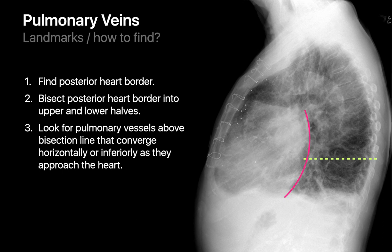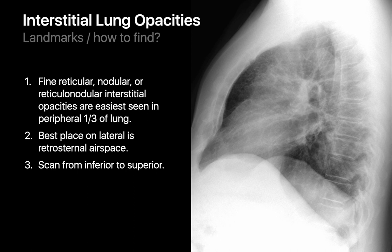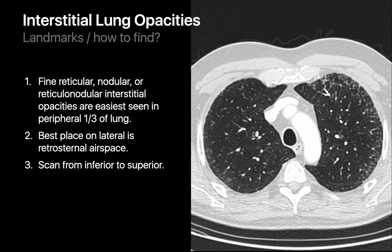Aortic and mitral valves can be identified by locating the carina on the lateral image and drawing an oblique line from the carina to the anterior costophrenic angle. Cardiac valves posterior to this line will be mitral valves, while aortic and tricuspid valves will be anterior to this line. Interstitial lung opacities are fine opacities that can be obscured by overlapping soft tissue on a lateral image; the highest-yield region to check is the retrosternal clear space, where fine interstitial opacities may correspond to anterior upper lobe changes.